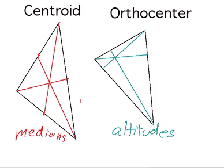And just a little trick that I use. Altitude begins with the letter A. Orthocenter begins with the letter O. So those are both vowels. Centroid begins with the letter C, or a consonant. Median begins with an M. And so we can remember that the centroid is the center of the three medians. The orthocenter is the center of the three altitudes.